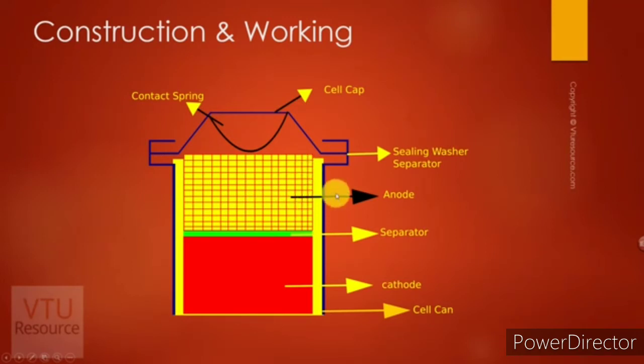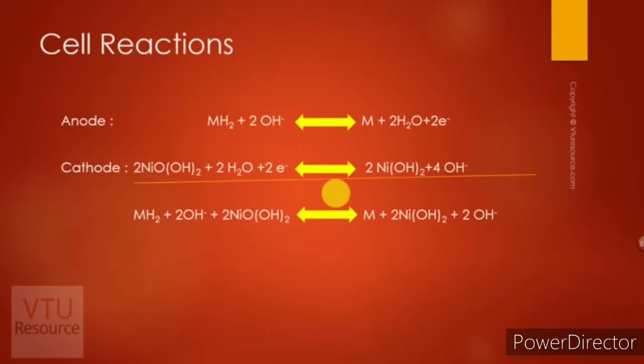The cell reactions are reversible. At the anode, the metal hydride undergoes oxidation in presence of electrolyte to give the respective metal, water, and electrons. These electrons liberated at the anode are used up in the cathodic reactions. At the cathode, nickel oxy-hydroxide undergoes reduction in presence of water and electrons to give nickel hydroxide and hydroxyl ions.